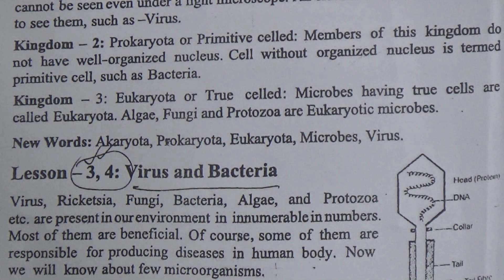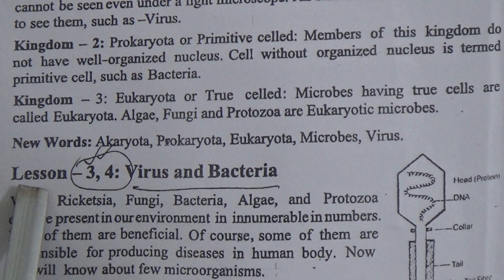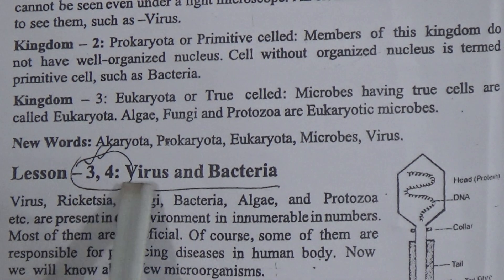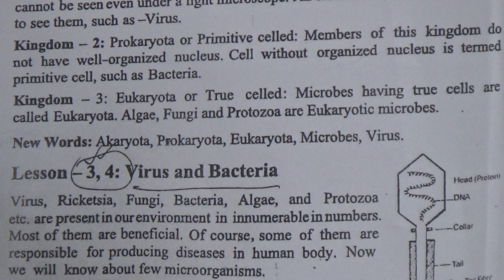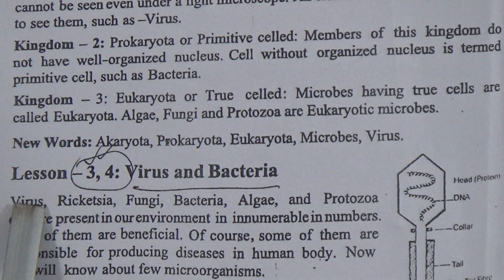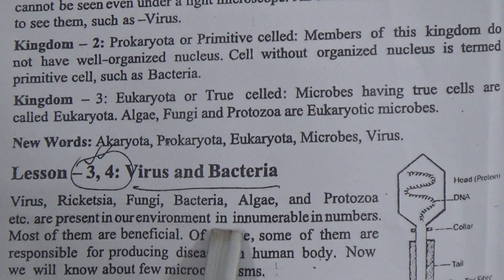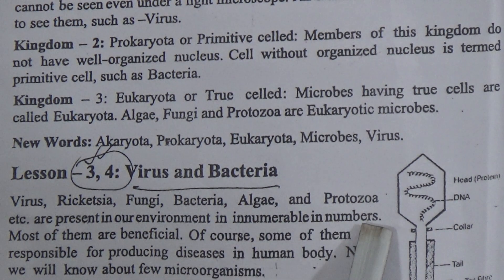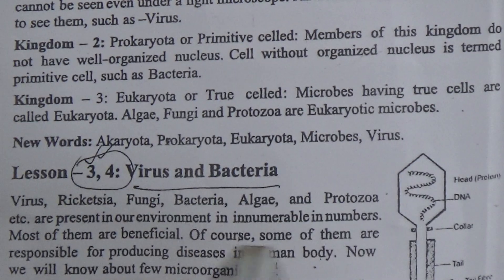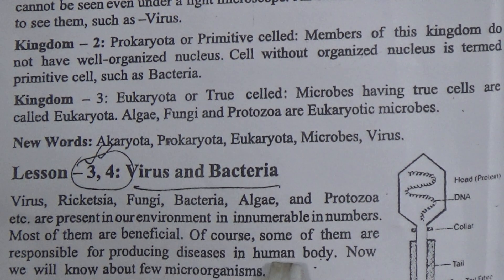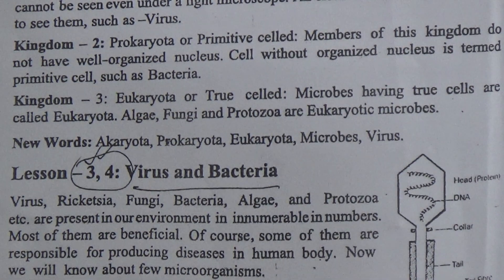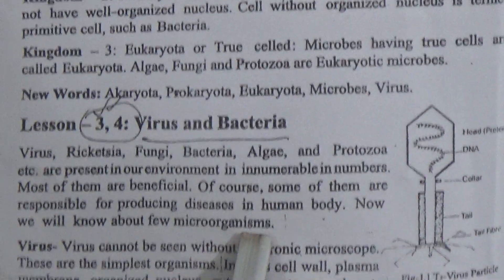Now we will learn lessons 3 and 4: Virus and Bacteria. Virus, rickettsia, fungi, bacteria, algae, and protozoa are present in our environment in innumerable numbers. Most of them are beneficial, but some of them are responsible for producing diseases in the human body. Now we will learn about a few microorganisms.